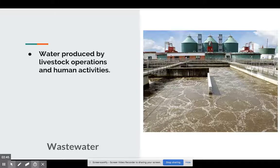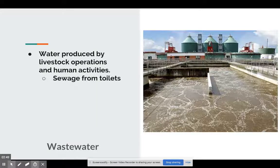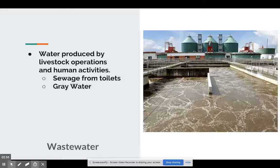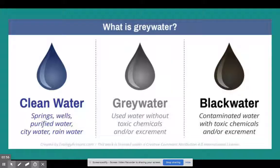We're going to notice that even livestock are involved in this, because livestock are being raised for our consumption. So we have sewage from toilets, and then even gray water. Gray water is essentially water that doesn't have any chemicals in it.